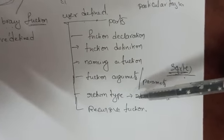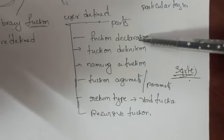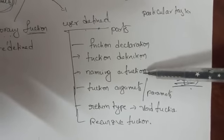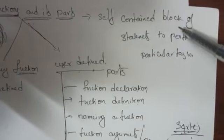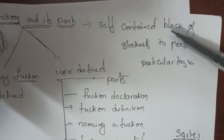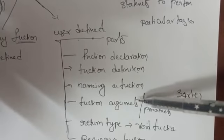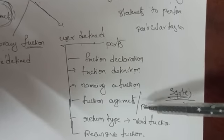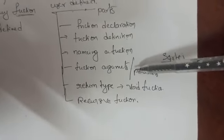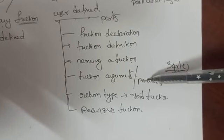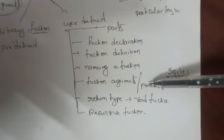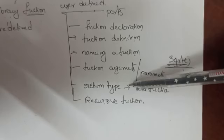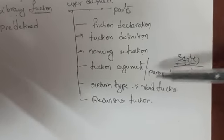If you want to write any function, function declaration is required, function body is required. If you want to write any self-contained block of statements — which is a function — that entire block can be identified by a function name. Some values you are sending to the function definition — those are called function arguments or parameters. The function returns a value back; that is called the return type — what value it returns back.